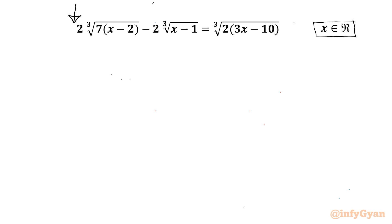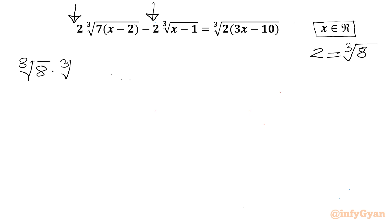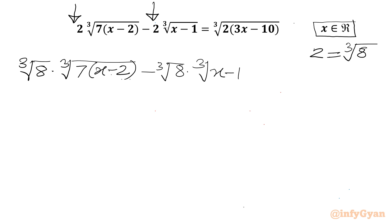We have 2 here and 2 here, so we can write 2 as cube root of 8. So I can write cube root of 8 times cube root of (7x minus 2) minus cube root of 8 times cube root of (x minus 1) equal to cube root of 2 times (3x minus 10).